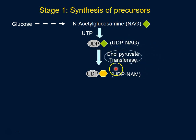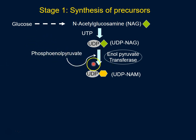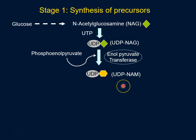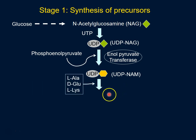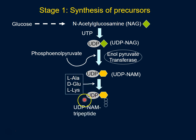UDP-NAM is then conjugated to three amino acids — a tripeptide — so we get a UDP-NAM tripeptide. These amino acids are L-alanine, D-glutamate, and L-lysine. You don't need to worry about these three amino acids, but what we do need to know are the two additional amino acids.